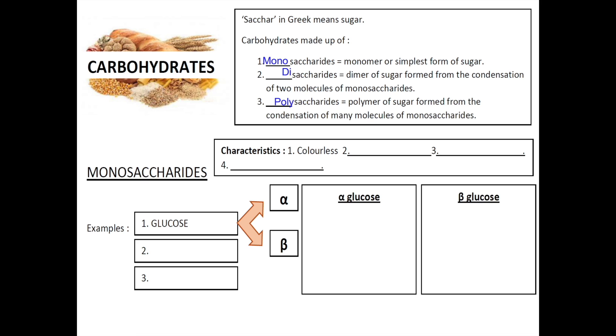Let's focus on monosaccharides first. There are four characteristics of monosaccharides: colorless, sweet-tasting, they can dissolve in water, and they can form crystals. There are many examples of monosaccharides. Those with five carbons are called pentose, those with three carbons are called triose. But for our syllabus, we will focus on those that have six carbons, or called hexoses.